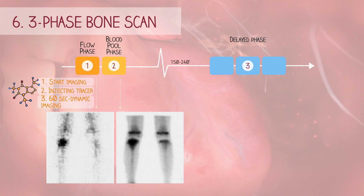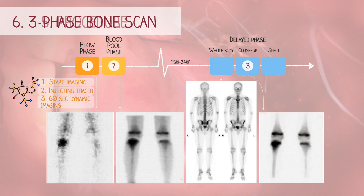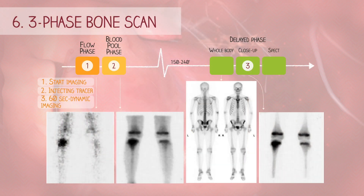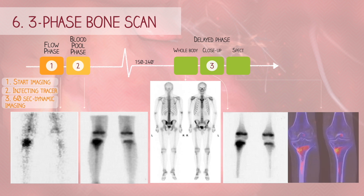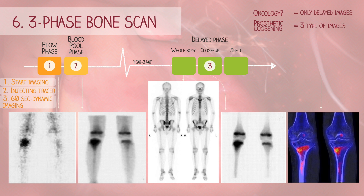Three hours post-injection, pictures of the whole body and a few close-up images will be taken. Abnormal bone activity will manifest as spots on the images. In cases where precise localization is challenging on 2D images, a rotating SPECT camera can generate 3D images, which can be used with a CT scan for even greater diagnostic accuracy. Since bone metastasis may not be as clearly visualized during the early phases of a three-phase bone scan, only the delayed phase is conducted.